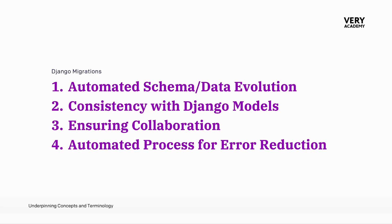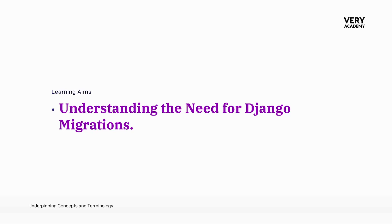To summarise, Django migrations provide automated schema and data evolution — they automate the process of evolving the database schema and handling data transformations. Using a migration system ensures consistency between Django models in the code and the actual database structure. At the same time, it ensures collaboration by providing a standardised method for developers to apply changes. And one of the main strengths is automation, which reduces the risk of manual errors during schema and data updates.